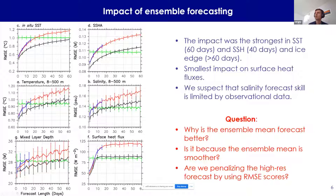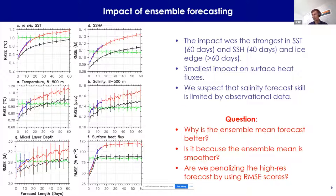Looking at other metrics in mid-latitudes — in-situ SST, upper ocean temperature from profiles, mixed layer depths, and surface heat flux — ensemble forecasting helps in every single case. The error bars on subsurface properties are much higher because we have fewer measurements. Surface heat flux has very short skill, less than 10 days, because it's highly dependent on the atmosphere, and atmospheric predictability is under two weeks.